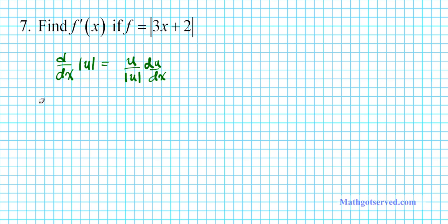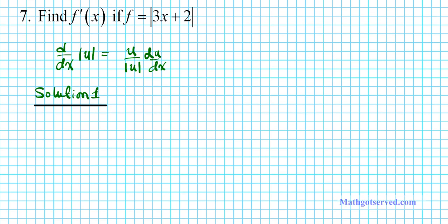For solution one, we're going to use this formula and also apply the chain rule. This is a composition of two functions — a composition of the absolute value function and the linear function. So we have f of g of x equals the absolute value of 3x plus 2.